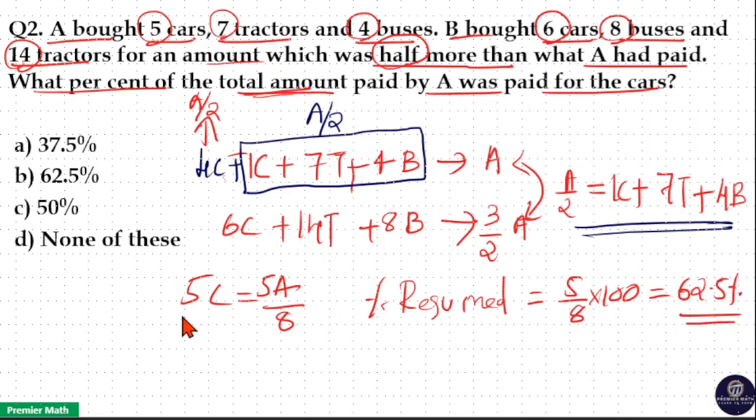So option B is your answer. The total amount paid by A is A, and for 5 cars A paid 5 by 8 A. If you take the percentage, it equals 5 by 8, and A cancels. That's why this is 62.5 percent.